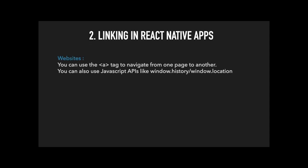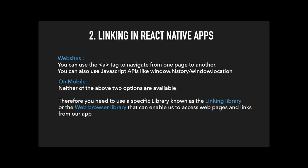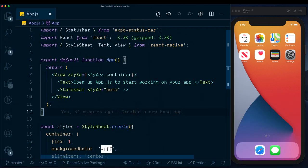Before we dive into deep linking in React Native, let's talk about linking. On a website you can easily use the anchor tag to navigate from one page to another, and you have access to JavaScript APIs like window.history or window.location. But in a mobile app, neither of those options are available, so you need to use a specific library — the Linking library or the WebBrowser library — to access web pages and links from within your app.